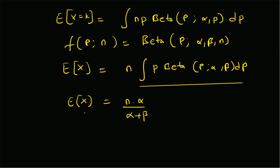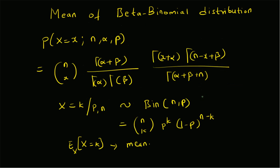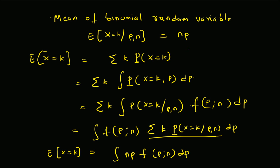To summarize, in this video we have looked at the derivation of the mean of the beta binomial distribution. The beta binomial distribution is given by n choose x, times gamma(alpha + beta) divided by the product of gamma(alpha) and gamma(beta), times the ratio of gamma(x + alpha) times gamma(n - x + beta) in the numerator, and gamma(alpha + beta + n) in the denominator. This distribution is a compounded distribution of binomial and beta: the conditional variable follows a binomial distribution and the parameter p itself follows a beta distribution, giving the conditional mean as n times p.